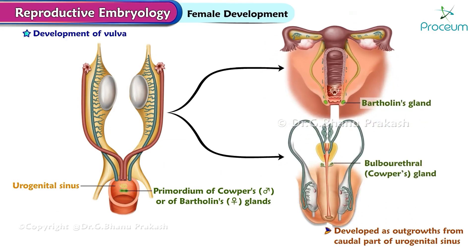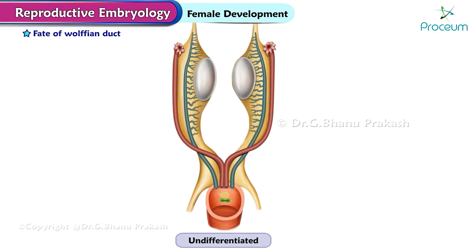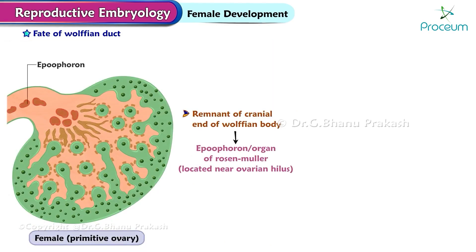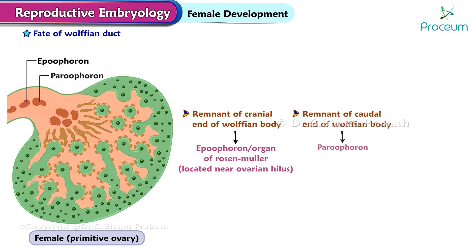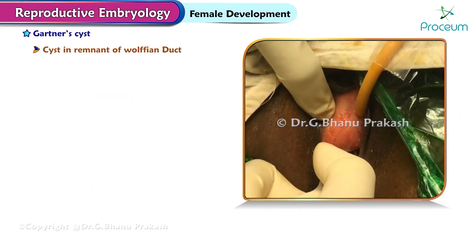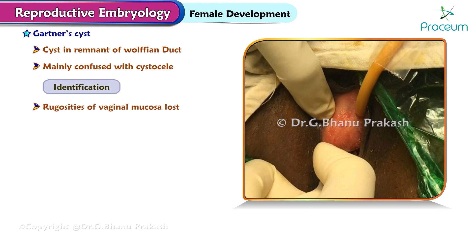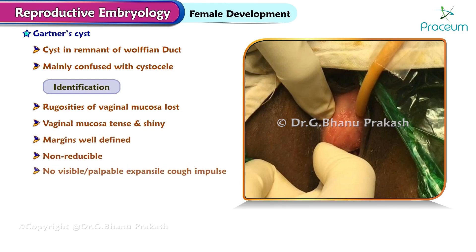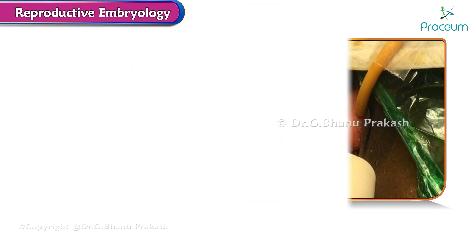The fate of the Wolffian duct: the Müllerian duct is also called the paramesonephric duct. The Wolffian duct is also called the mesonephric duct. The remnant of the cranial end of the Wolffian body is the epoophoron (organ of Rosenmüller), located near the ovarian hilum. The remnant of the caudal end is the paroophoron. The remnant of the Wolffian duct is Gartner's duct. Gartner's cyst is a cyst in the remnant of the Wolffian duct, seen mainly in the anterolateral aspects of the vagina. It may be confused with a cystic lesion; identifying features include loss of rugosity of vaginal mucosa, tense and shiny vaginal mucosa, well-defined margins, non-reducible, no visible or palpable expansile cough impulse, and genital asymmetry.